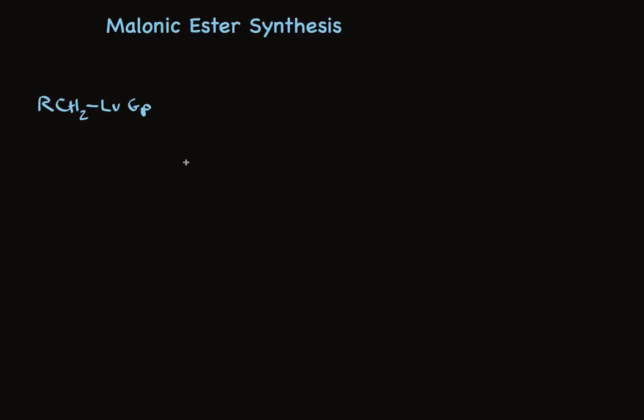A primary alkyl group, or methyl, that has a good leaving group attached is one of the starting materials, and the other one is a diester. And I'm going to write it like this, because this second carboethoxy group is lost in this process that makes carboxylic acids. So it starts with a compound